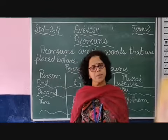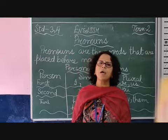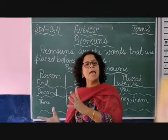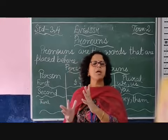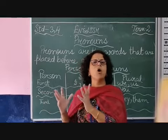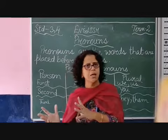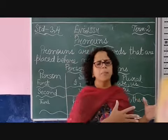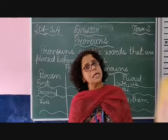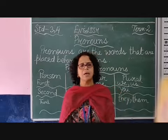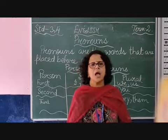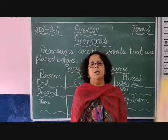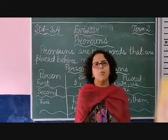For third person, when we are talking about a man or a boy or somebody masculine, we use he. When we are talking about a woman or a girl or feminine, then it is she. When we talk about something where we don't know whether it is female or male, we use it for singular. And for plural, we use they. For example, they are in the playground playing football.